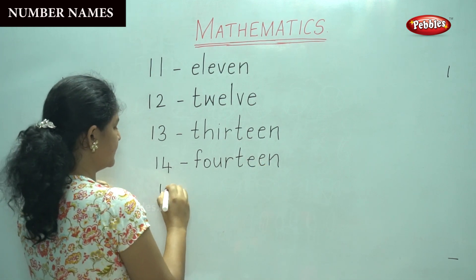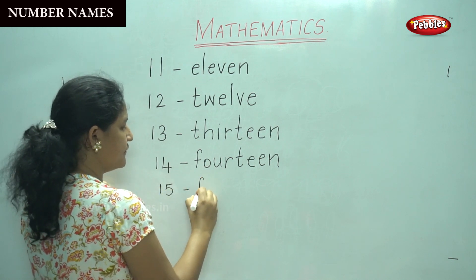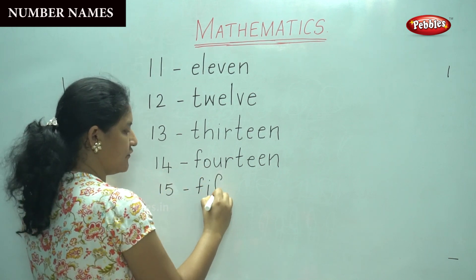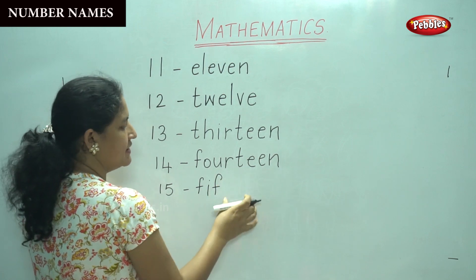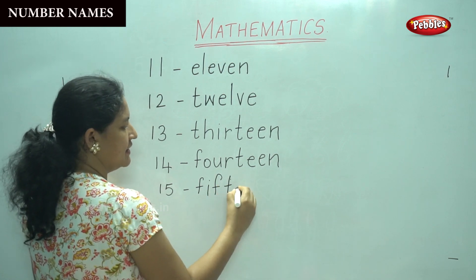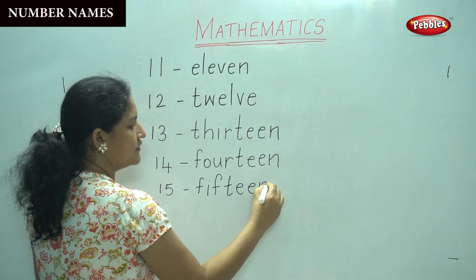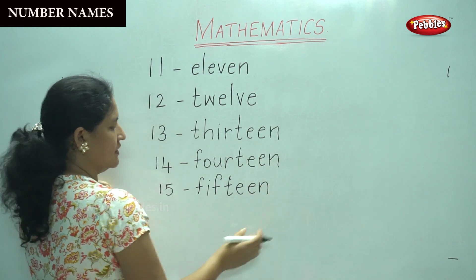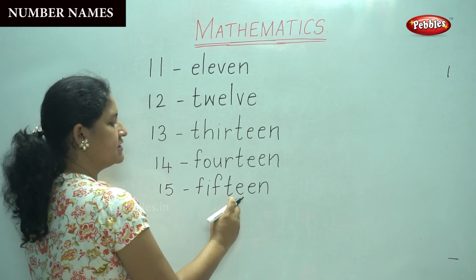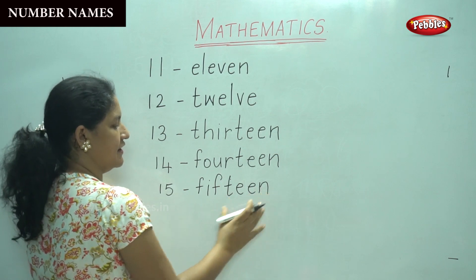Number 15. F, I, F — and you add teen: T, E, E, N. 15. So it is F, I, F, T, E, E, N. 15.